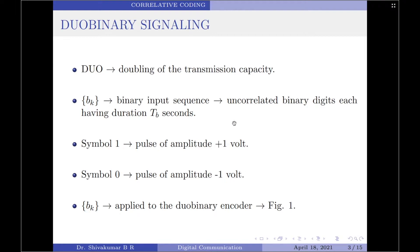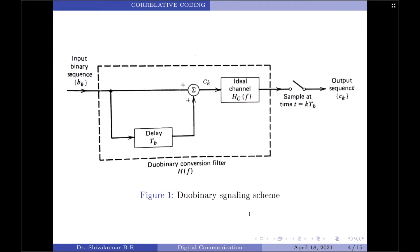We are representing symbols 1 and 0 using polar format. Now, let the input binary sequence Bk be applied to a duobinary encoder as shown in the diagram. The input binary sequence Bk is first passed through a simple filter involving a 1-bit delay element. For every unit impulse applied to this filter, we get two impulses spaced 1 Tb seconds apart at the filter output. We can express the digit Ck at the output of the simple filter as the sum of the present binary digit Bk and its previous value B(k−1).